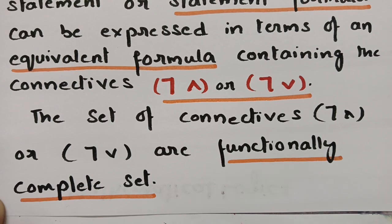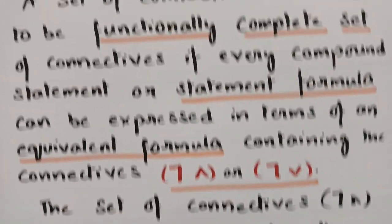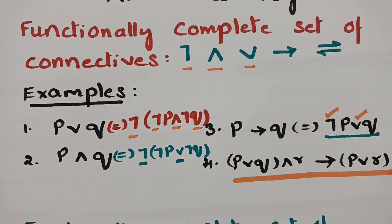This is a very simple concept. If you understand it, you can express any kind of set of connectives in terms of negation∧conjunction or negation∧disjunction so that it becomes a functionally complete set of connectives.